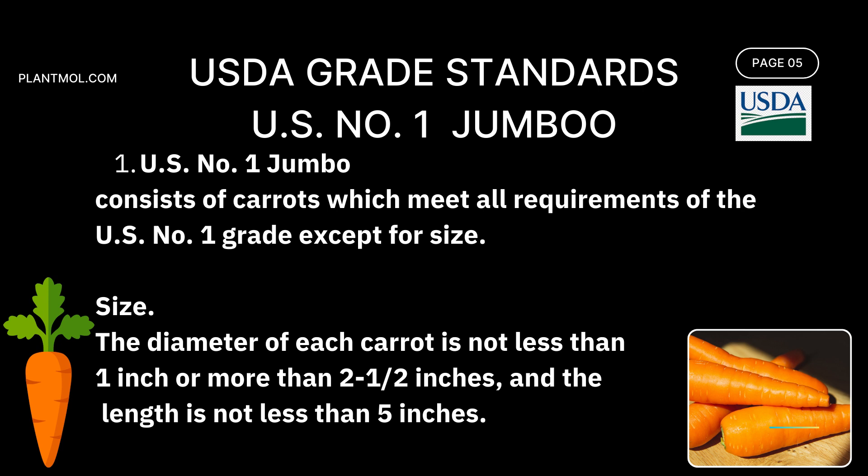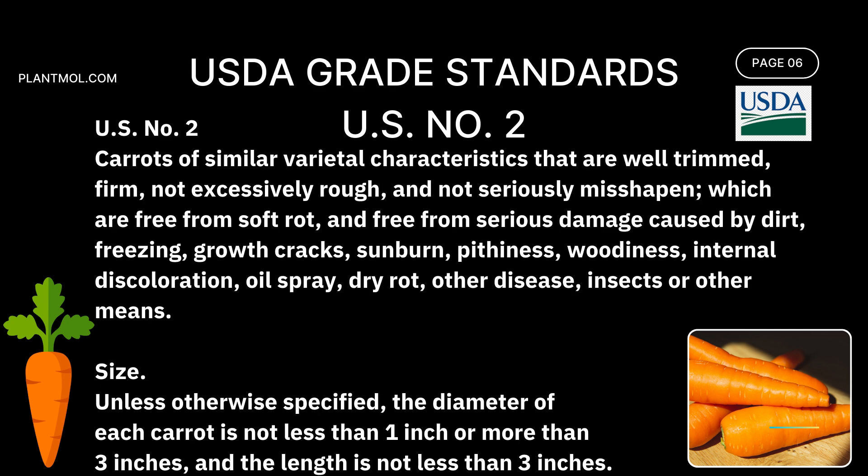The fourth standard is called U.S. Number Two, which consists of carrots of similar varietal characteristics which are well-trimmed, firm, not excessively rough, not seriously misshapen, which are free from soft rot and free from serious damage caused by dirt, freezing, growth cracks, sunburn, pithiness, woodiness, internal discoloration, oil spray, dry rot, other disease, insects, or other means.